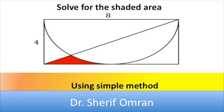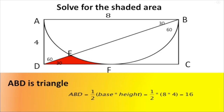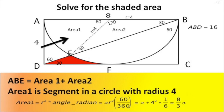Hello everybody, Sharif Umran speaking. I am going to solve a question which went viral in China: solve for the shaded area. The area in red — knowing the base and the height, we can find it. It is half base multiplied by height, so it equals half of eight times four, which is sixteen.